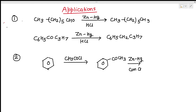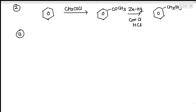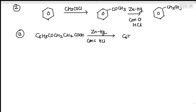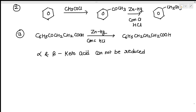As a result, a straight chain is introduced in the benzene ring. Thirdly, it can be used for the reduction of keto acids. For example, C6H5-CO-CH2CH2CH2-COOH undergoes Clemmensen reduction to give C6H5-CH2CH2CH2CH2-COOH. However, alpha and beta keto acids cannot be reduced by this method.